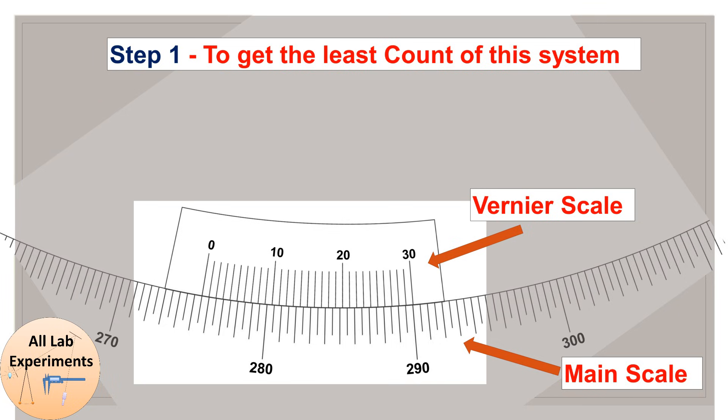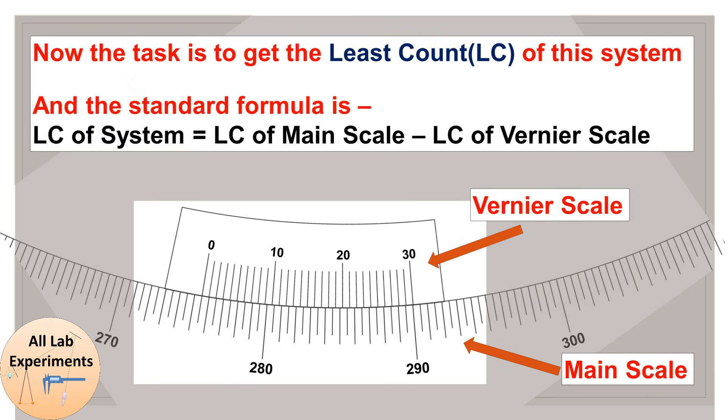We want to calculate the least count of this system. The formula to calculate the least count of a vernier system is: least count of main scale minus least count of vernier scale. So first of all we are going to calculate the least count of main scale.